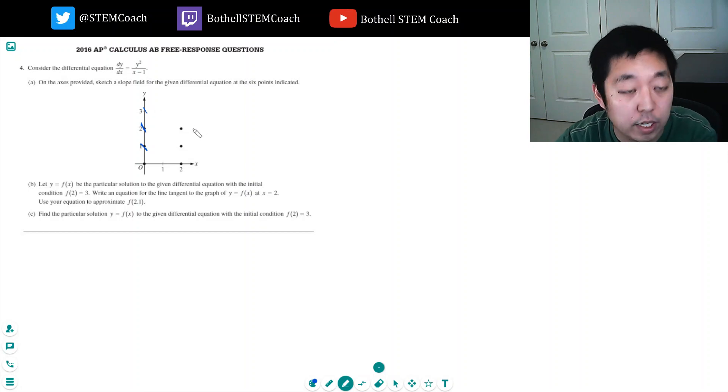Oh, whoops, they didn't ask about that one. So at (0, 0), it's just 0, because it's 0 over negative 1, which is 0.